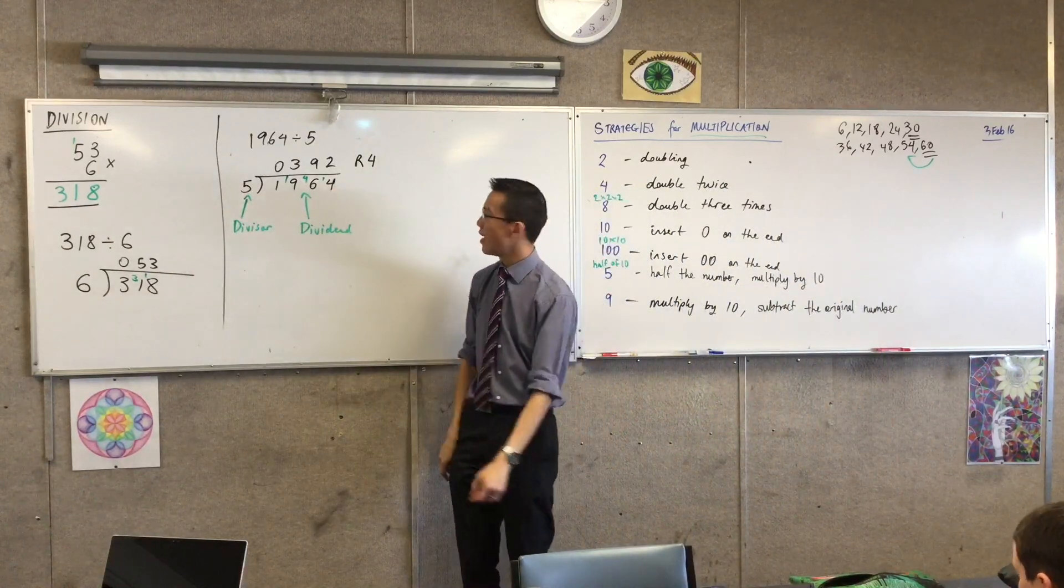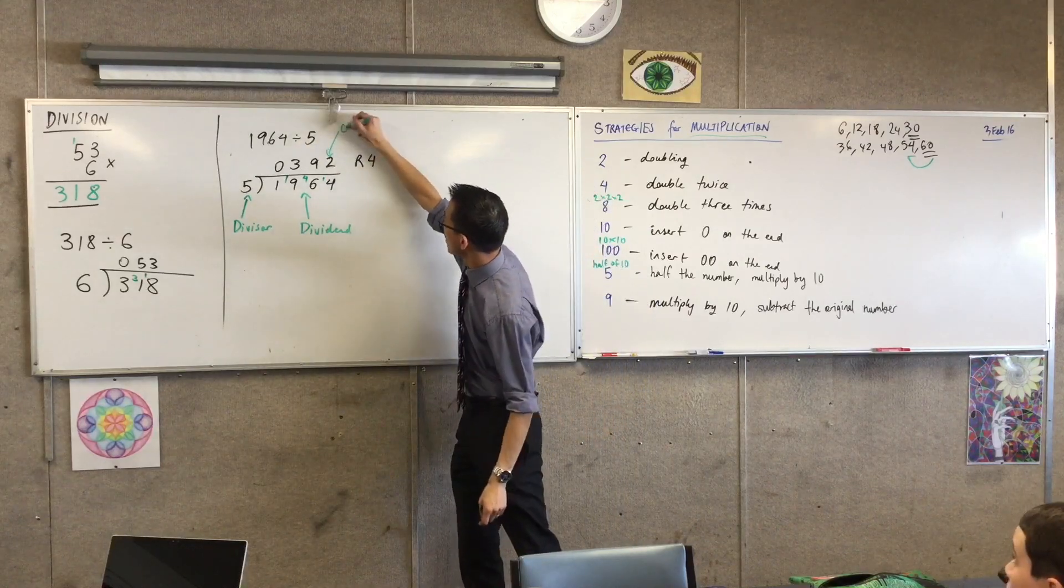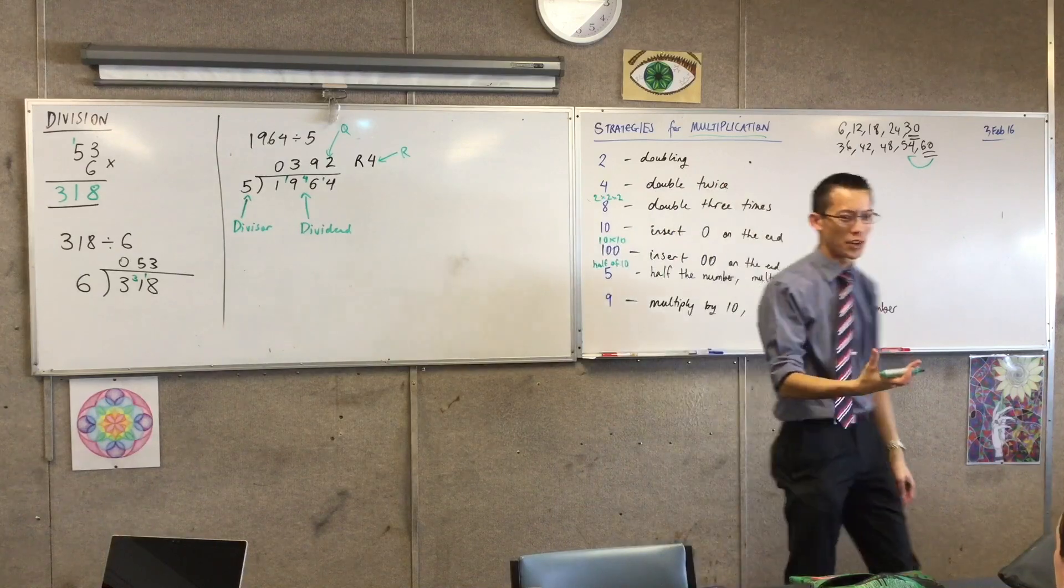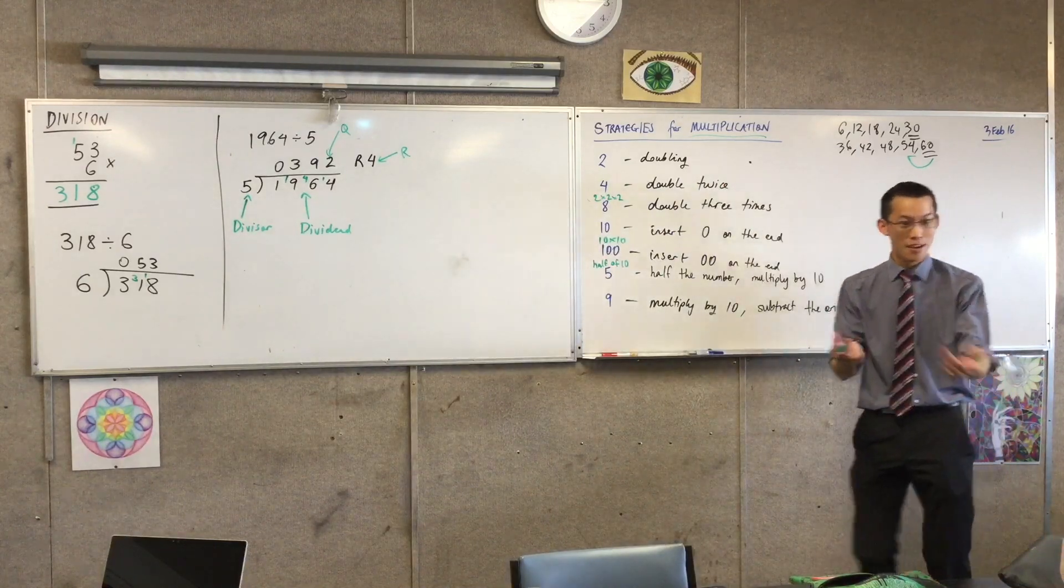Then we've got two last things. One that starts with Q and one which I think you already know that starts with R. We'll do the easy one first. Starting with R is remainder. Remainder.